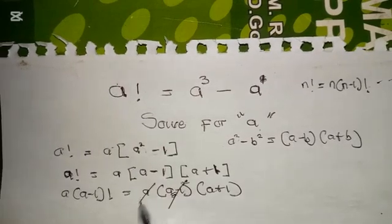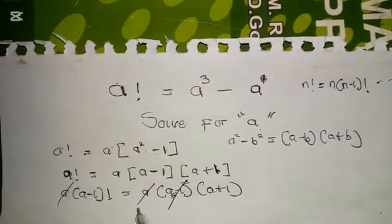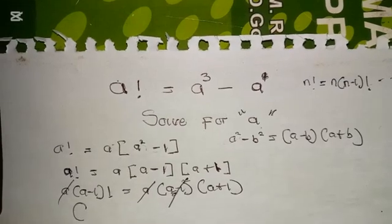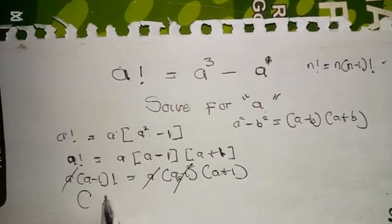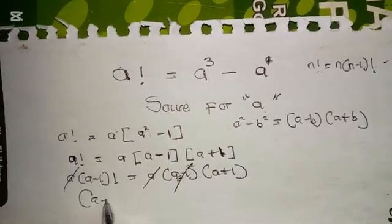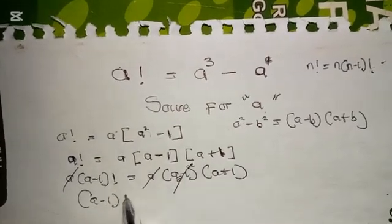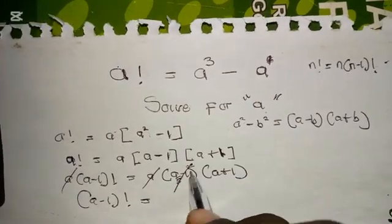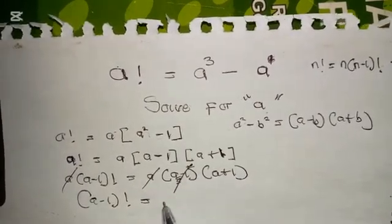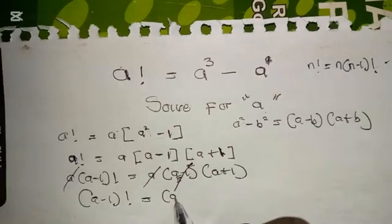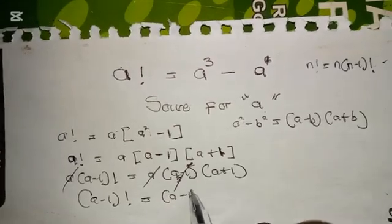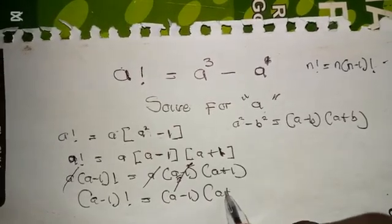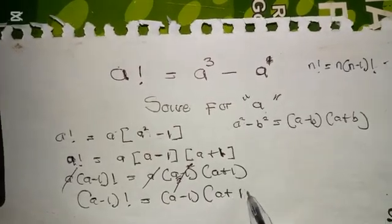After cancellation, we have (a minus one) factorial equals (a minus one) times (a plus one).